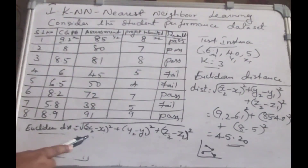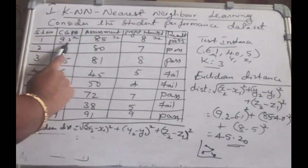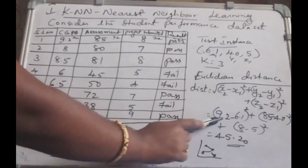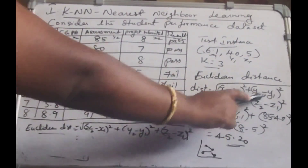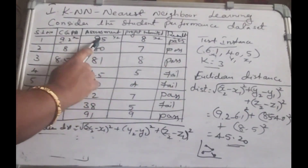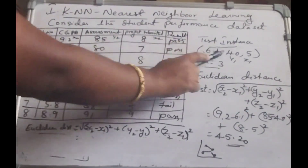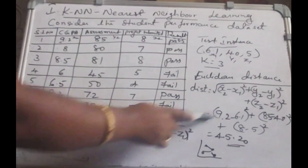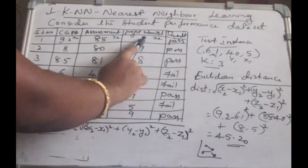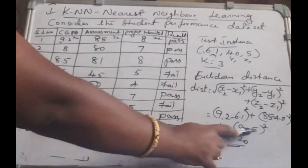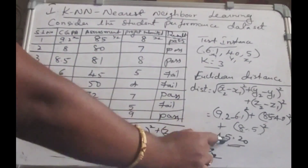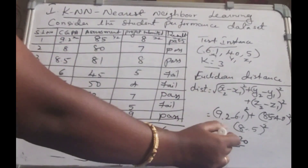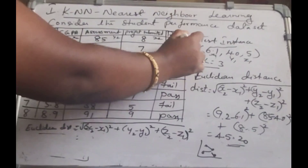Substituting into the formula: X2 minus X1 — X2 is 9.2 and X1 is 6.1 — so 9.2 minus 6.1. Then Y2 minus Y1: Y2 is 85, so 85 minus 40, the whole square. Plus Z2 minus Z1 the whole square: Z2 is 8, so 8 minus 5, the whole square. Computing that gives 45.20. So the Euclidean distance for the first instance is 45.20.